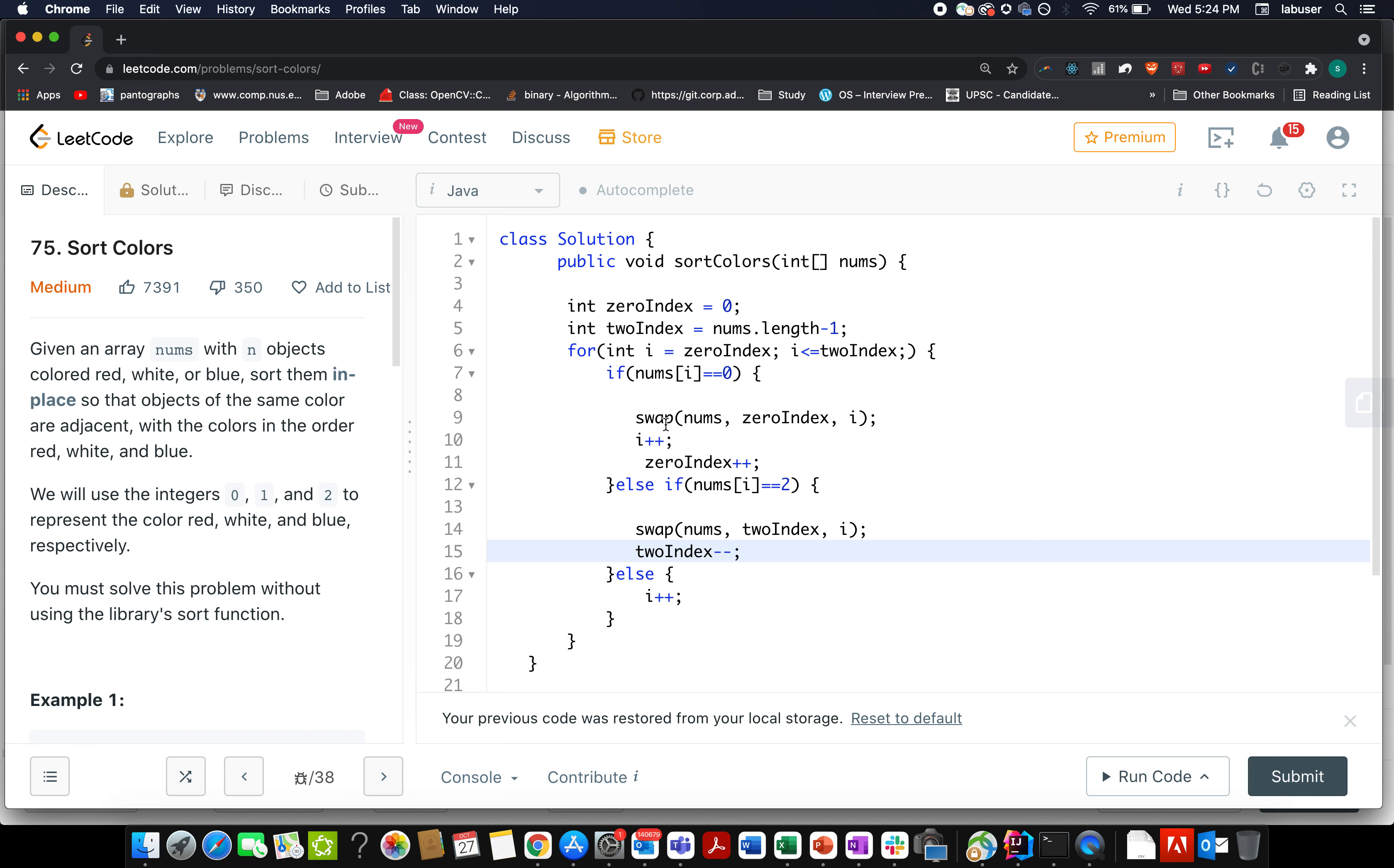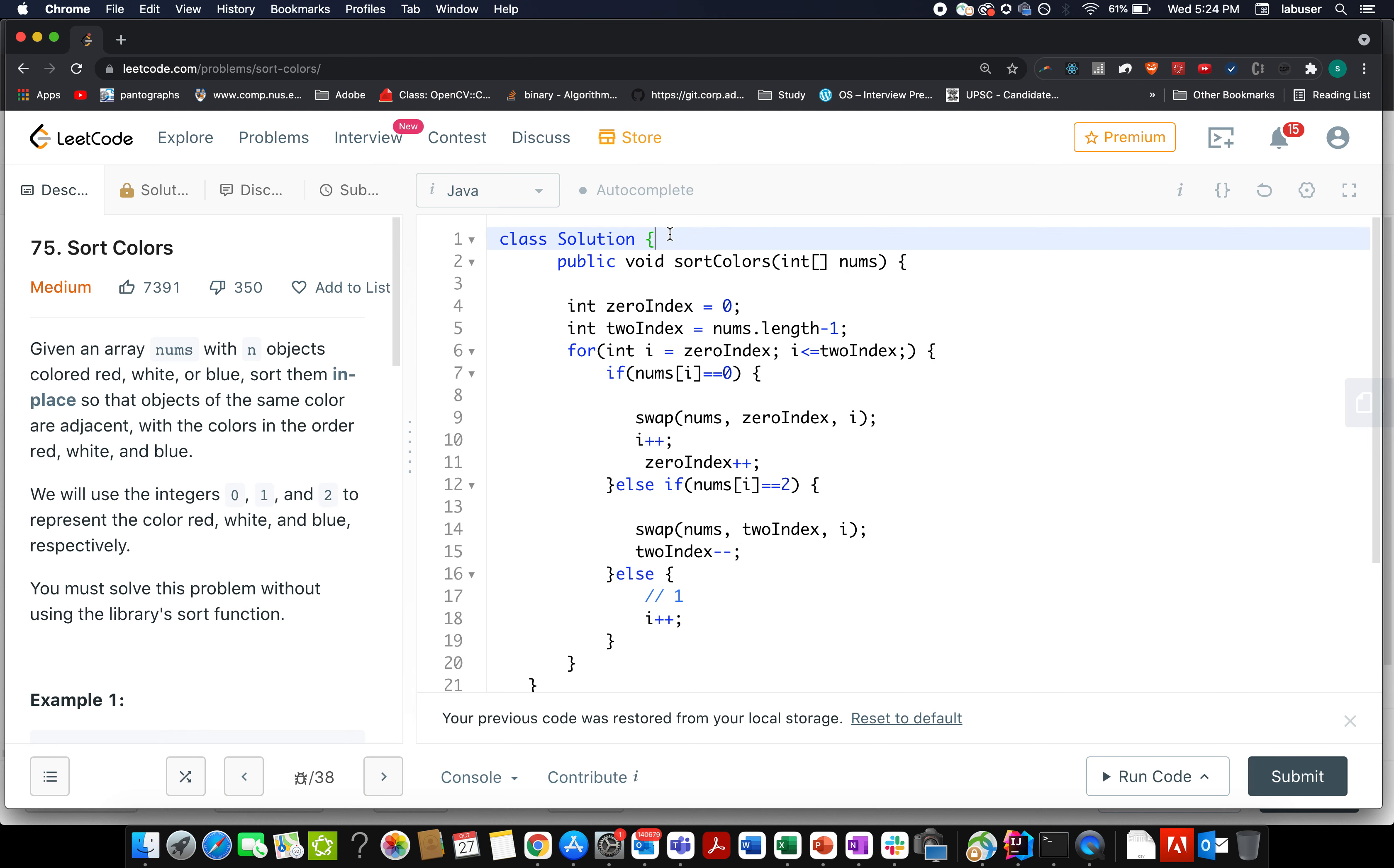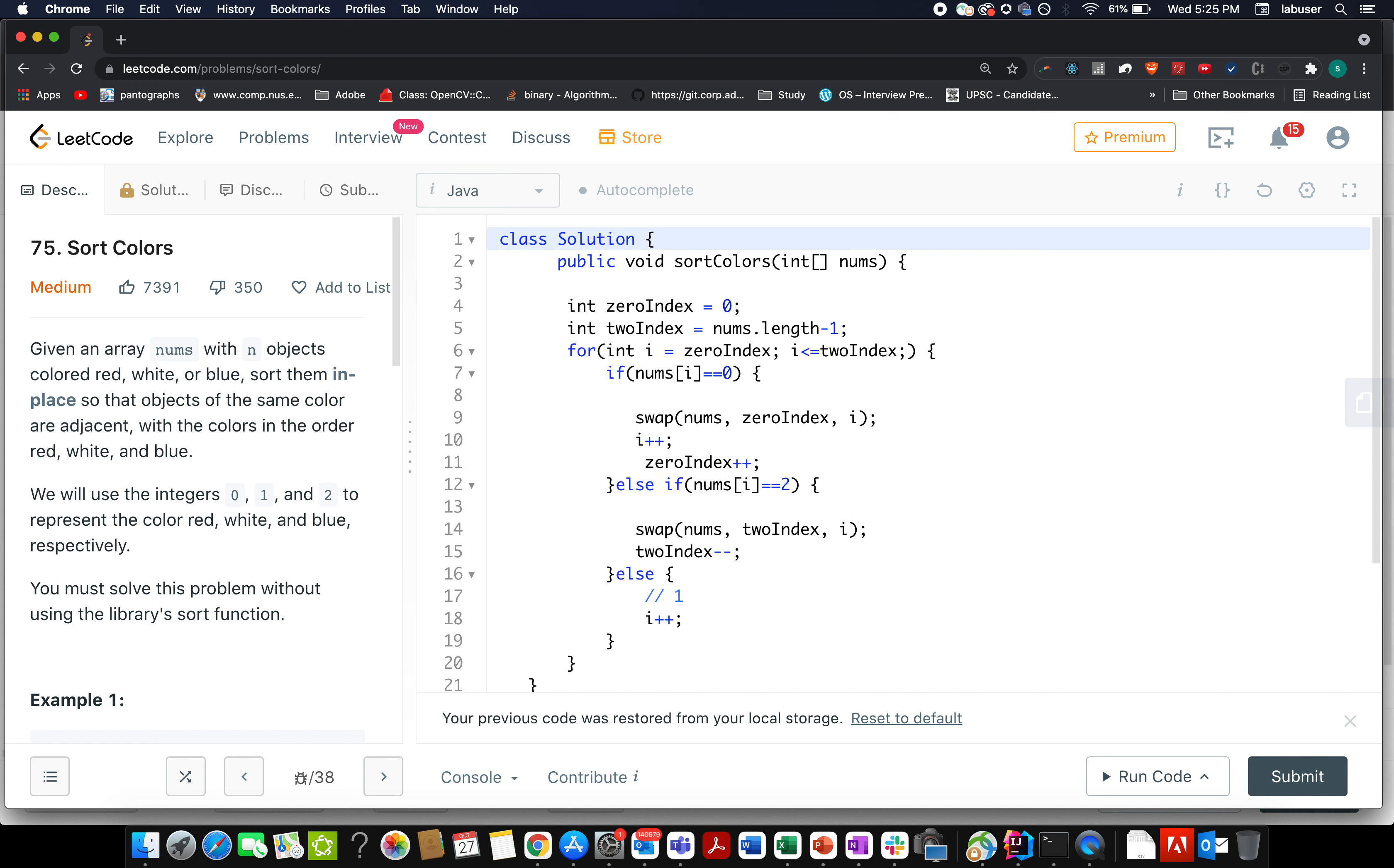Let's move ahead. In case the value is 1, which would be here, we simply increment the value of i. Swap is pretty simple and straightforward. The time complexity of this approach is order of n and the space complexity is constant time.